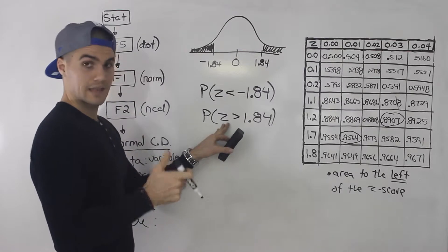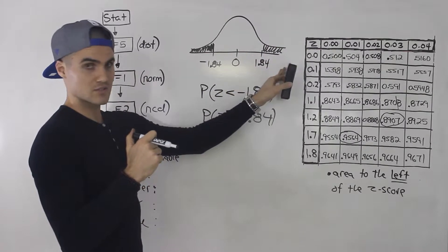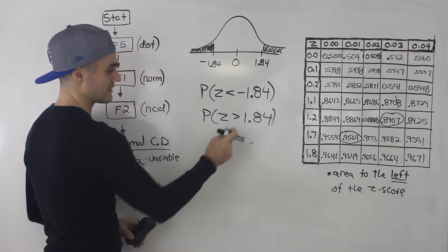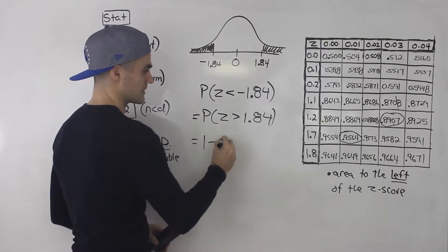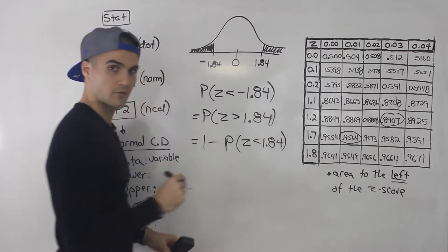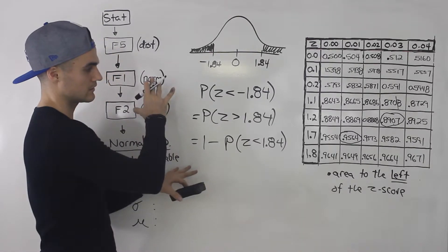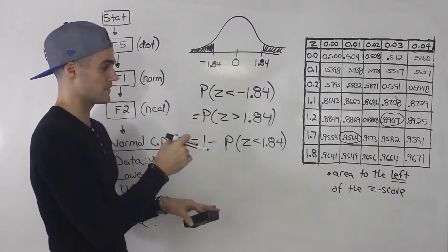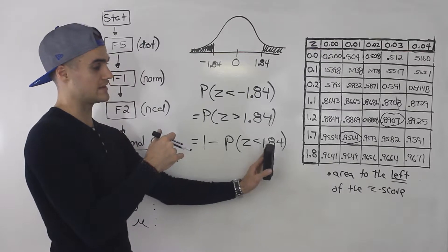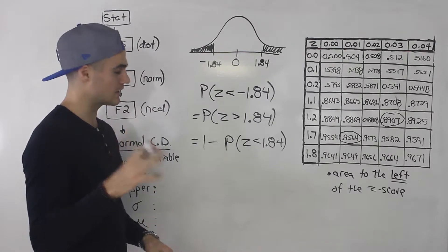The problem with this, like the example we did before, is that this area is to the right of a z-score, but the table only gives us the area to the left of a z-score. So we have to rewrite this as 1 minus the probability that z is less than 1.84. Hopefully you're seeing why that symmetry concept is important — you have to create equivalent expressions using a positive z-score where you're dealing with the probability that z is less than a certain value in order to use this table properly.